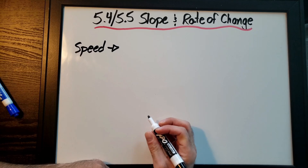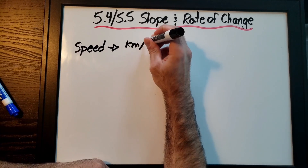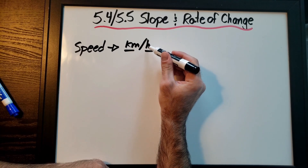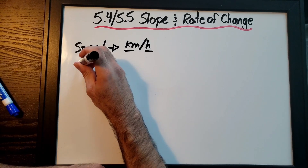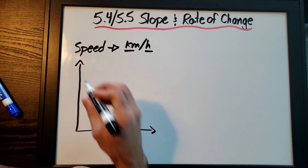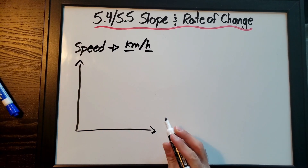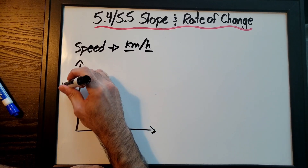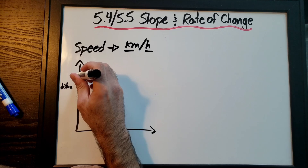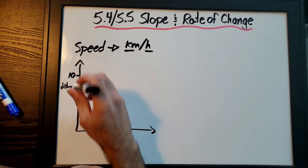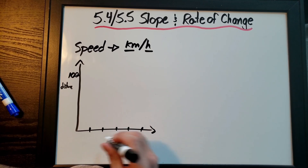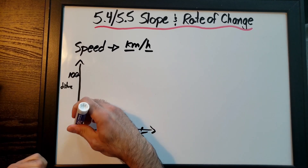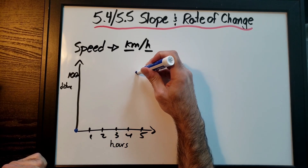Speed in your parents' car is given as kilometers per hour — two separate units — which is what makes it a rate of change. We are changing the kilometers for every hour. On a graph, instead of x and y, we label the axes as hours (horizontal) and distance in kilometers (vertical). Let's say we start at 0 and reach 100 km after 4 hours.